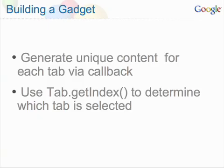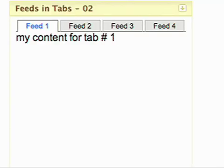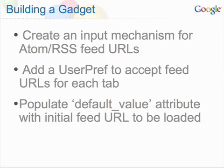You will generate unique content for each tab in the callback function. Now you have the basic gadget shell with four tabs. The next step is to pull an RSS or Atom feed for each tab. You will define the default value for each URL feed that will be loaded, but you will add user prefs so that users can configure their own data when they use your gadget.